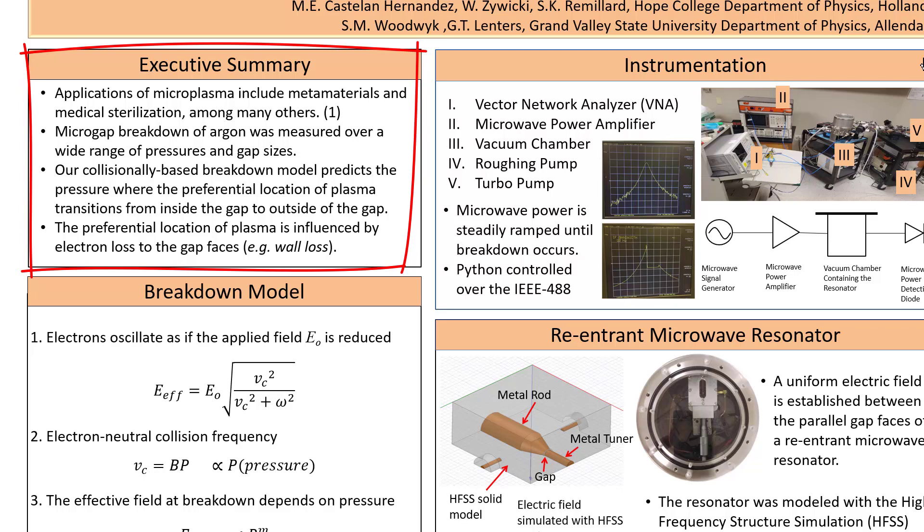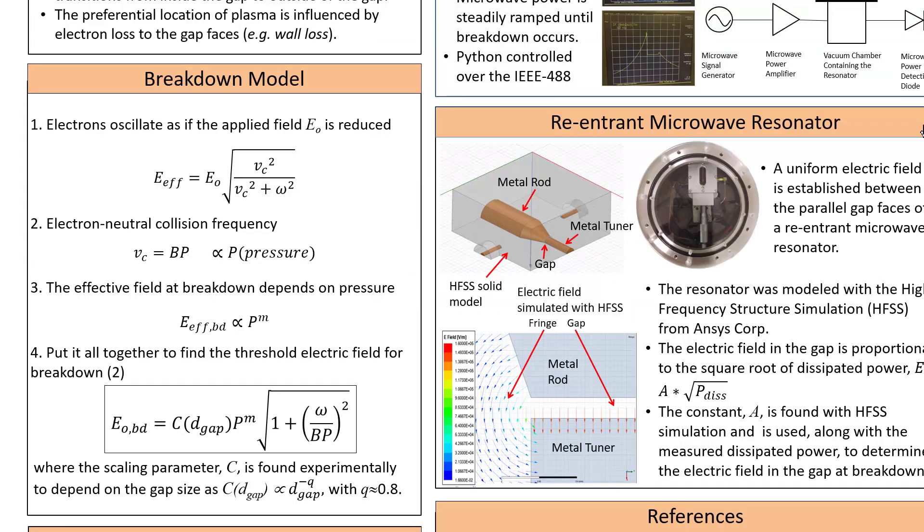Our results have shown that this preferential location of plasma is determined by electron loss to gap faces.